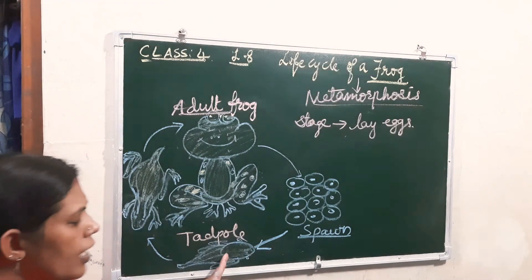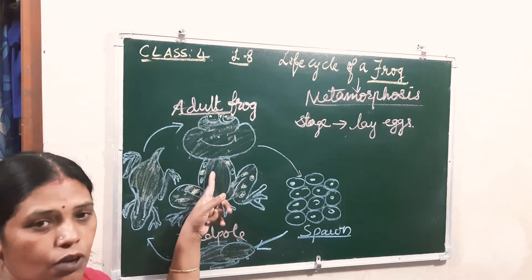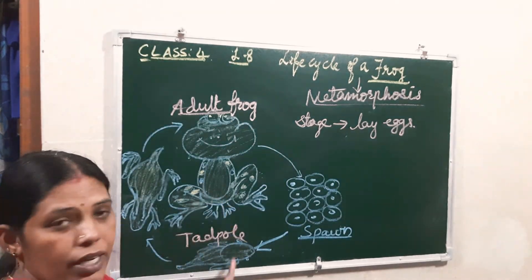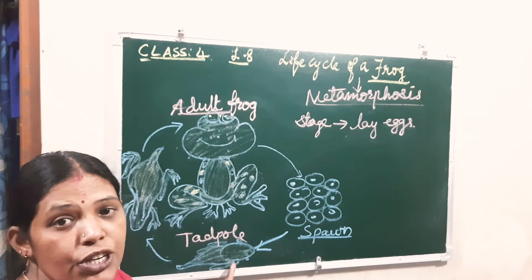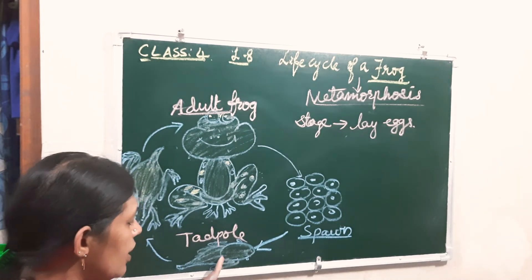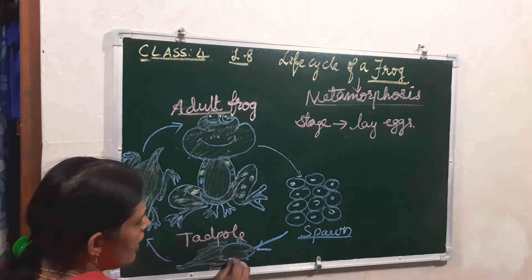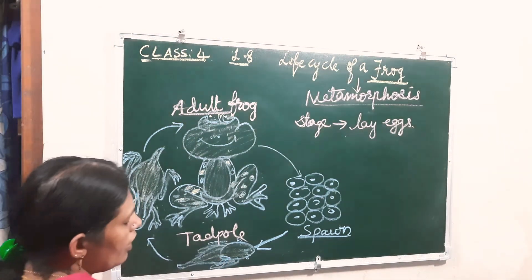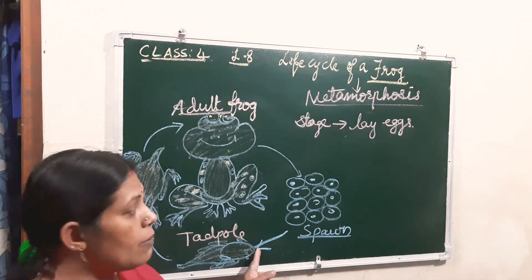See how it looks. Is it like the adult frog? Totally different! It looks like a fish. It is having gills also — gills for breathing. Through that only it breathes.